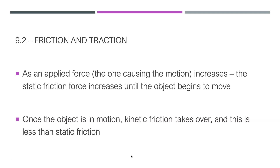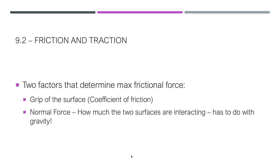Friction always acts opposite of the motion. So if your motion is to the right, then friction is to the left. When an applied force goes up, the static friction force is going to increase until the object begins to move, and then kinetic friction takes over. Static friction will always be larger than kinetic, partly because once an object is moving, it has momentum and that decreases the friction.